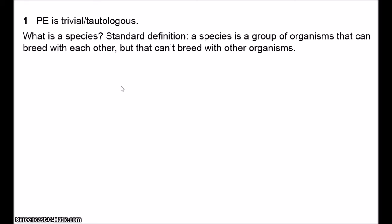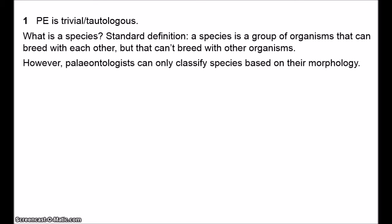Paleontologists tend to classify species according to the only reliable information they have about them, which is their morphology. Morphology concerns the form and features of organisms. So if you look at the fossil of a snail you can determine how big it was, the conicity of its shell, the structure of spirals on the shell, its texture — whether it was smooth or bumpy and so on. We classify species based on their morphological features.